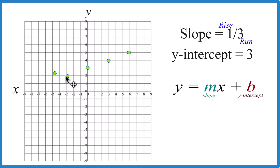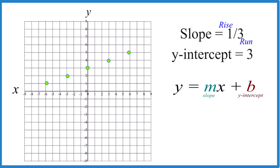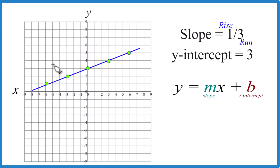Down one, one, two, three to the left — so all of these points are on the line of slope one-third and y-intercept of three. Let's put a line through that, then we can put arrows here to show it goes to infinity. And that's our line.